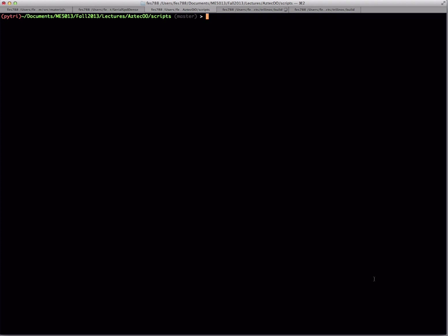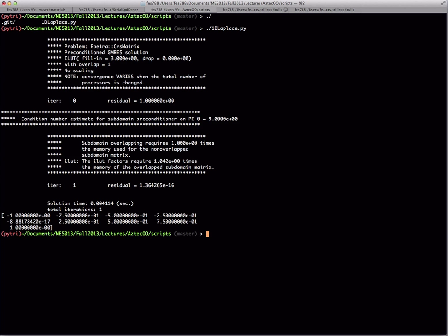So if we go over to the command line, we'll start by just running our code. I call it 1D Laplace here. We'll run it in serial, and there you see that what's printed out here at the bottom is the solution. So the very first entry is minus 1, like we specified, and the last entry is 1, like we specified. And then what you get in between is actually just the solution to this problem, which is just a linear line. So just the linear values between minus 1 and 1.